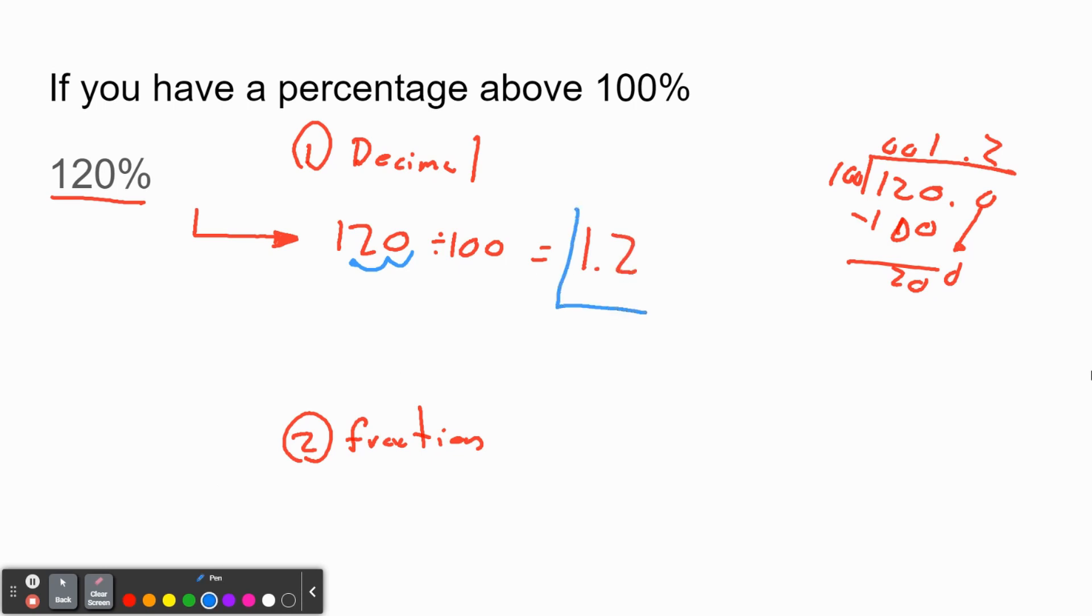Either way, you'll get 1.2. It's the same thing as 120%, just written as a decimal. Nothing too bad. Hopefully, whichever way you choose to do it is fine, as long as you make sure you show all of your work.